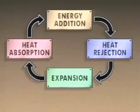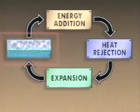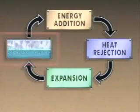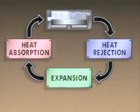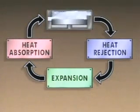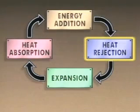The heat absorption step causes the refrigerant to change phase from a liquid to a vapor. The vapor also receives heat and its temperature increases, so the refrigerant changes from a low temperature liquid to a higher temperature vapor. In the energy addition step, energy is added to the refrigerant so it can move through the rest of the refrigeration cycle. In this step, also called the compression step, the refrigerant vapor from the absorption step is compressed, which increases the refrigerant's pressure and temperature.